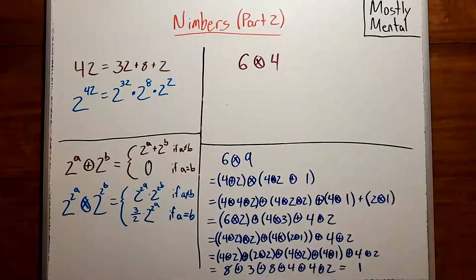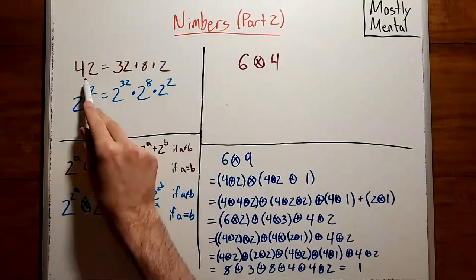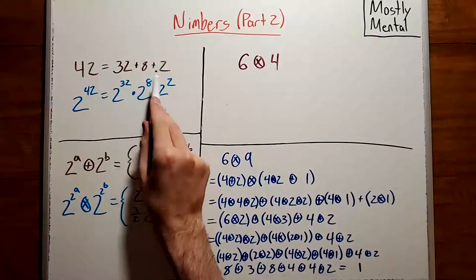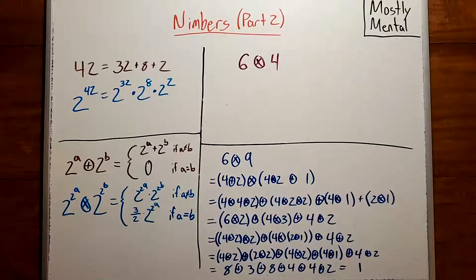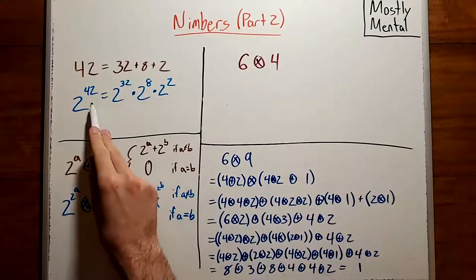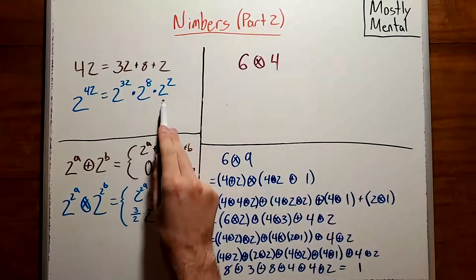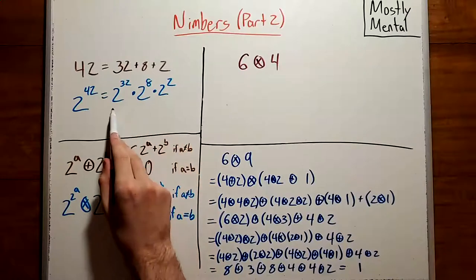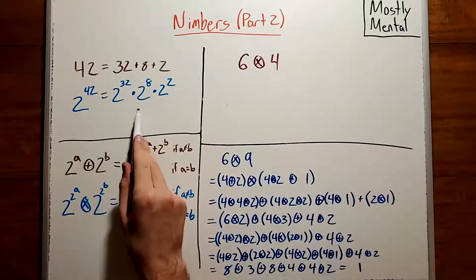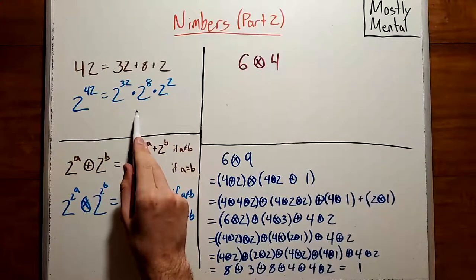We can write any number as the sum of powers of two using the binary expansion. So for example, 42 is 32 plus 8 plus 2. And in the same way, we can write any power of 2 as the product of numbers of the form 2 to the 2 to the n, using the binary expansion of the exponent. So 2 to the 42 is 2 to the 32 times 2 to the 8 times 2 to the 2. And these numbers here of the form 2 to the 2 to the n are known as Fermat 2 powers.